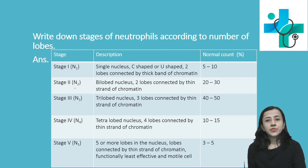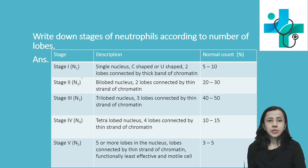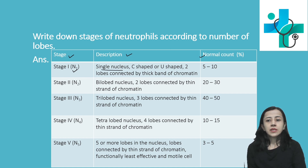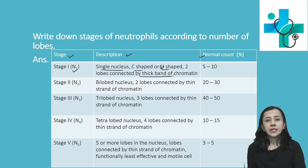The stages of neutrophils according to number of lobes: Stage 1, also termed N1, has a single nucleus that is C-shaped or U-shaped. If U-shaped, you can find 2 lobes, but these 2 lobes are connected by a thick band of chromatin. Normal percentage is 5 to 10%.